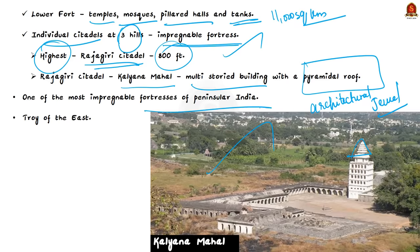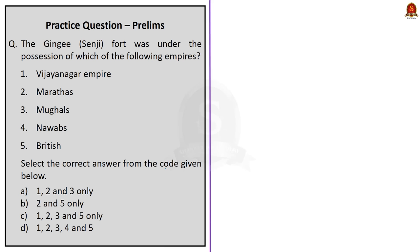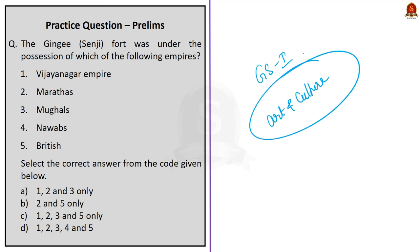Due to the historical and military importance of the fort, Jinji is known as the Troy of the East — Troy being the most powerful kingdom as per ancient Greek literature. That is all about this news article on the Jinji or Senji Fort, located in the Villupuram district of Tamil Nadu. Though this is a factual discussion, you can utilize these points in your mains answers for questions on art and culture.